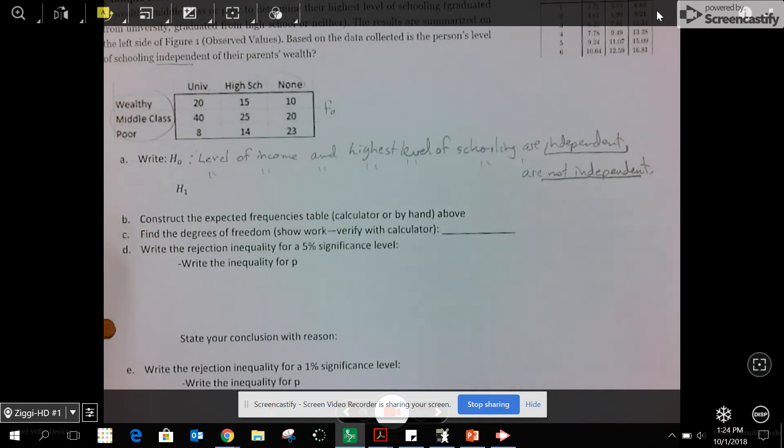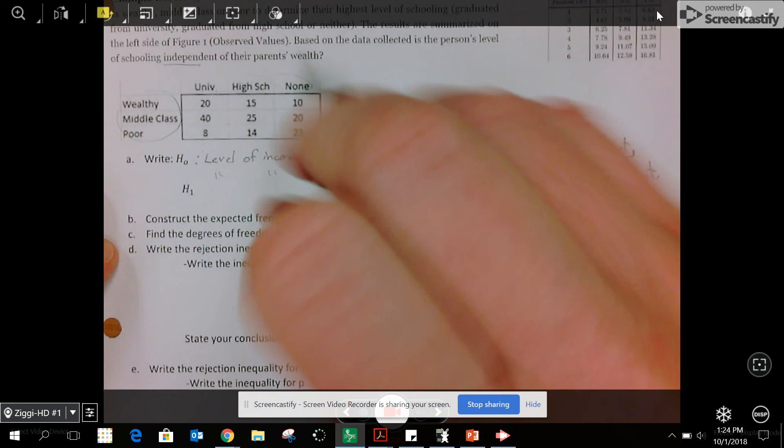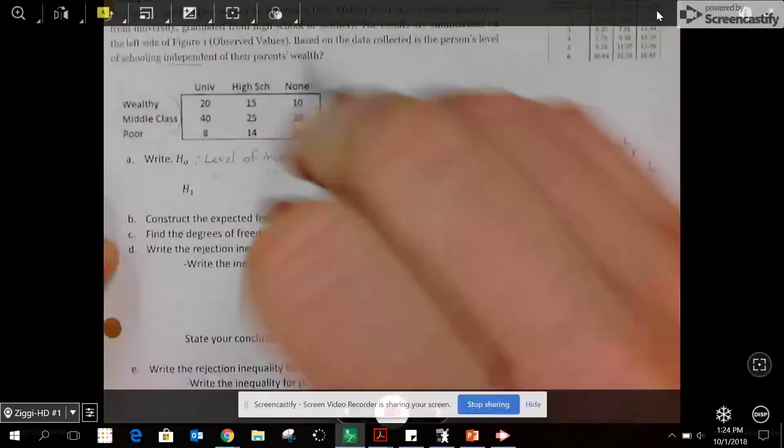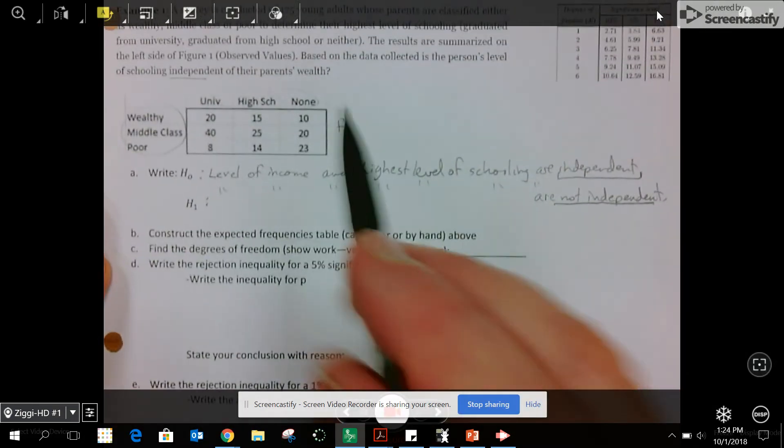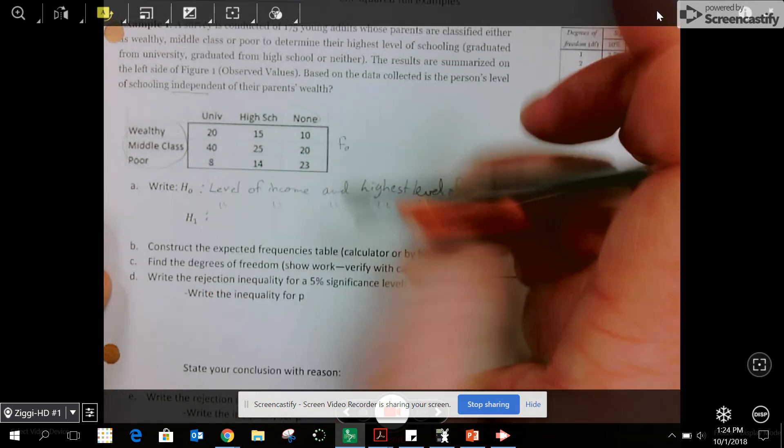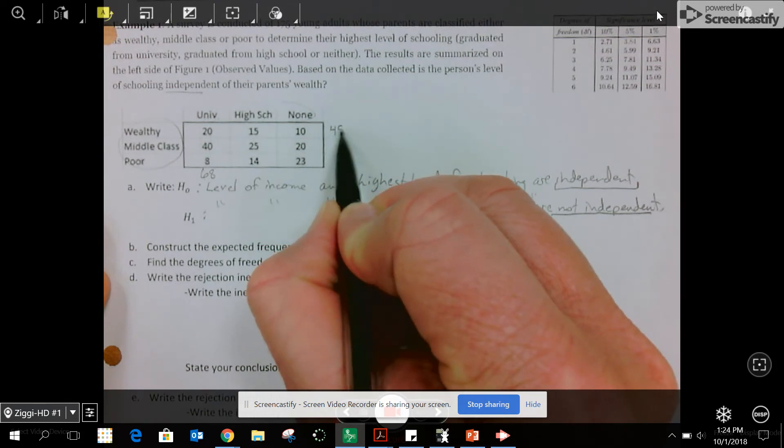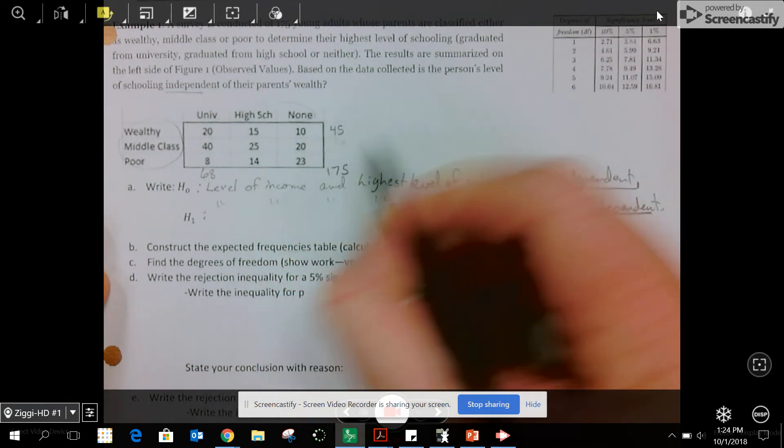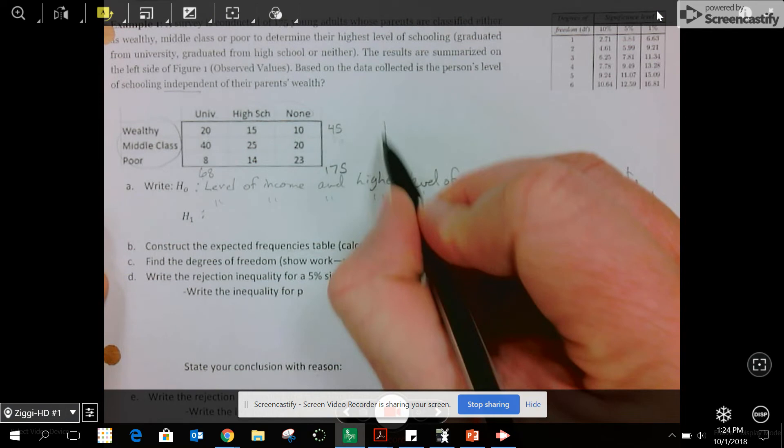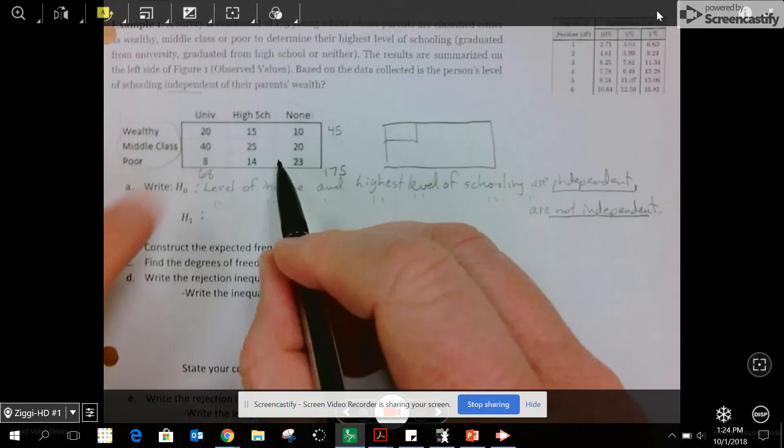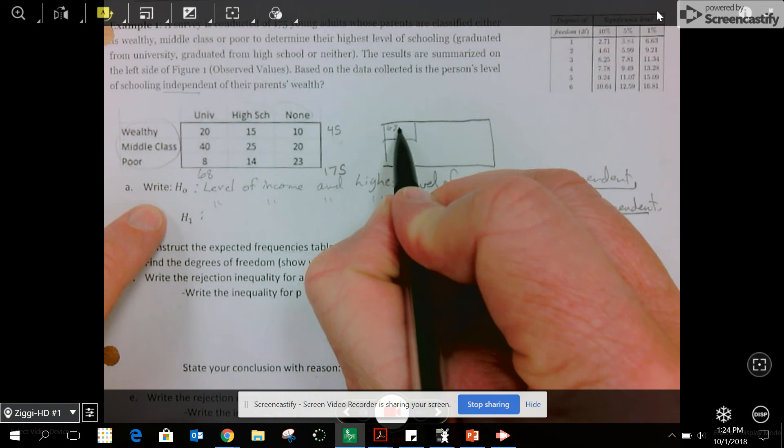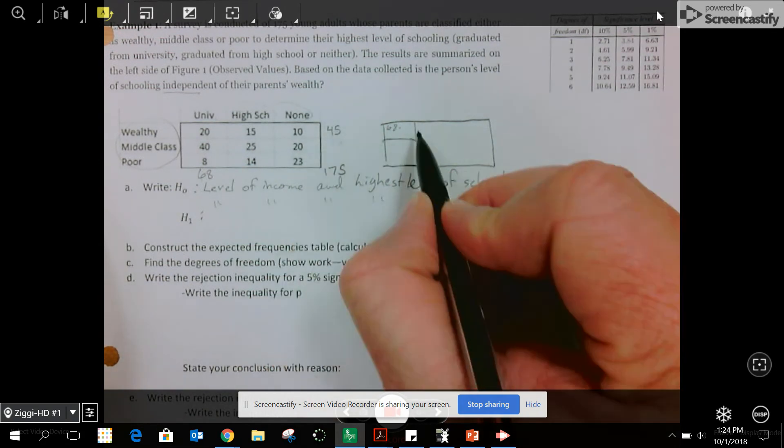Construct the expected frequency table, calculator or by hand from above. If you're doing this by hand, you need to know the row totals, column totals, and the overall total. This would be 45. The overall total is 175. If I were doing this by hand, I'd be taking 68 times 45 divided by 175.